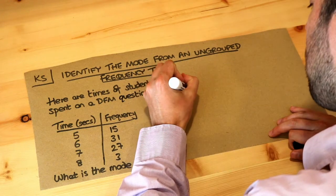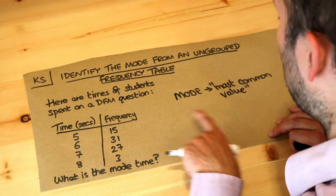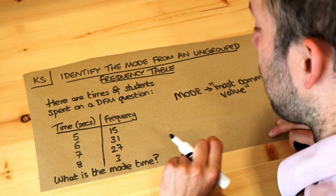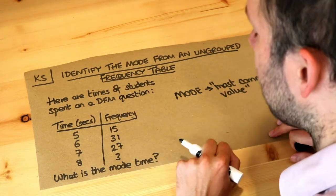Now remember that the mode is the most common value. And we need to use the frequencies here because the frequency tells us how often that value occurs. We've got 15 people at a time of 5. That's how often, how common it occurs.